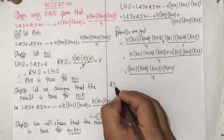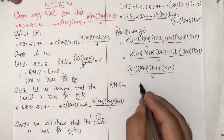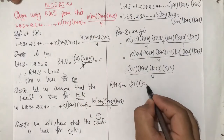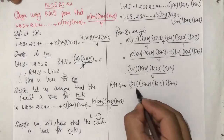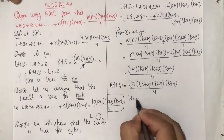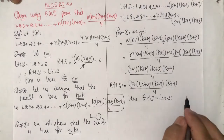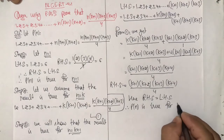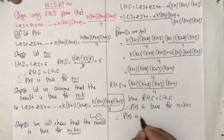Now right hand side: putting n = k+1, we get (k+1)(k+2)(k+3)(k+4) / 4. Therefore RHS = LHS for n = k+1. Hence P(n) is true for n = k+1. Therefore by the principle of mathematical induction, P(n) is true for all natural numbers n.